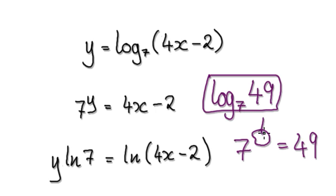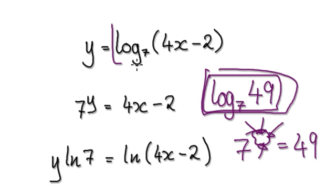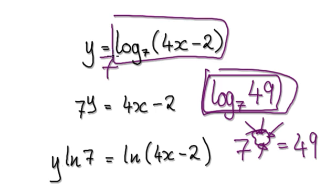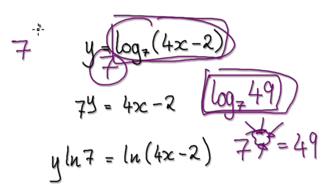So this whole block here is this exponent. This whole block here is this exponent. So when you are here, if you exponentiate both sides with base 7, that would be 7 to the power of this whole thing here, 7 to the power of this whole thing here.